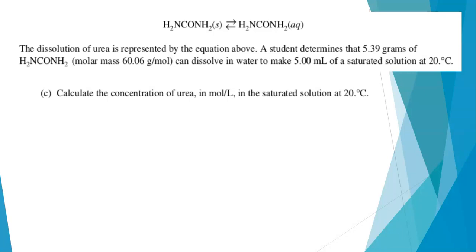We've got an equation here that shows urea going into solution where water is the solvent. A student finds that 5.39 grams of urea, and we're given its molar mass, can dissolve in water to make 5.00 milliliters of a saturated solution at 20 degrees Celsius. It's a saturated solution, this is as much urea as we can dissolve at this temperature in that volume of water. Well, it's actually the total volume of solution that matters, not the volume of the water.